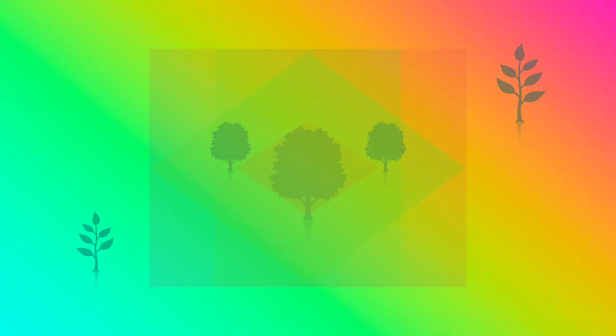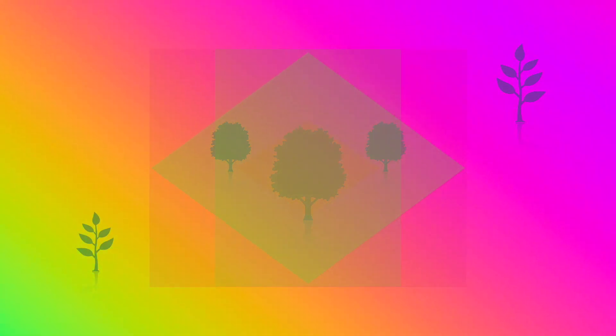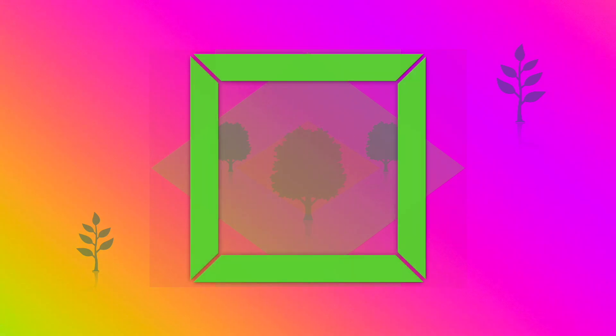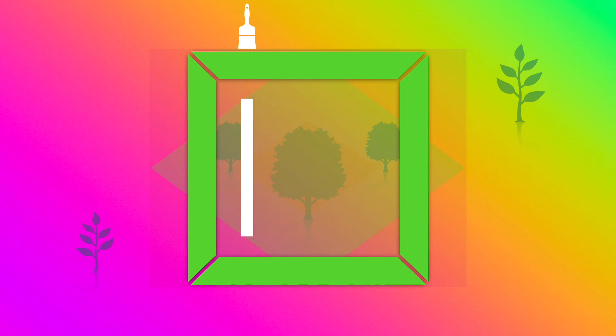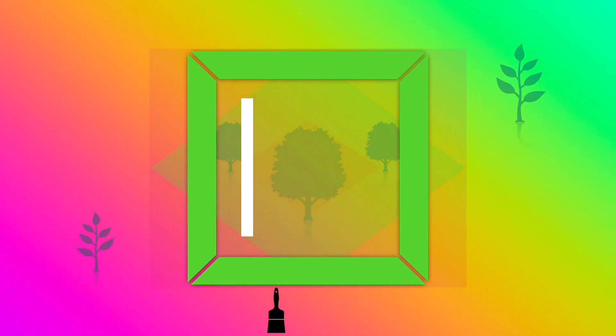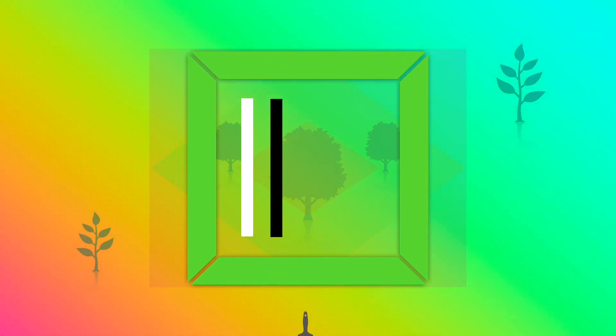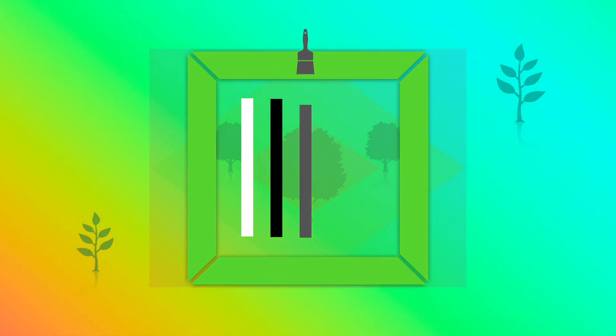In addition to their concealing and revealing properties, masks are also an invisible sheet which can be painted upon — but they're not painted on with any color, just white, black, or any shade of gray. Black paint conceals or makes invisible. White paint reveals or lets what's beneath show through and be visible, and all shades of gray are somewhere in between.